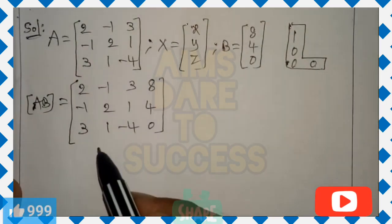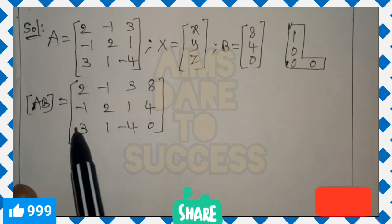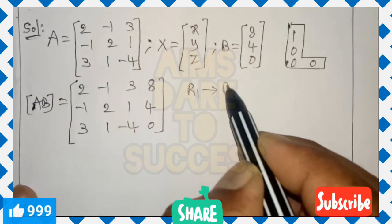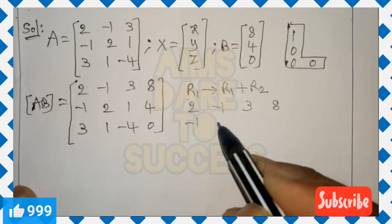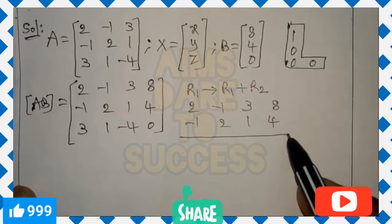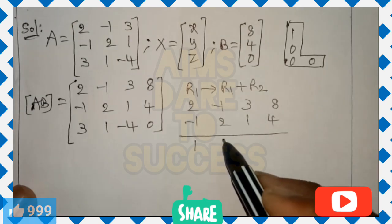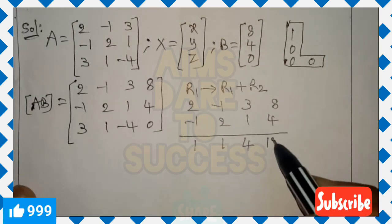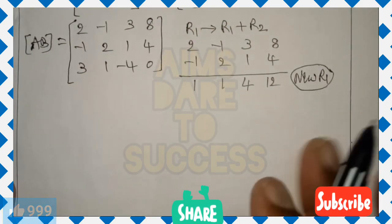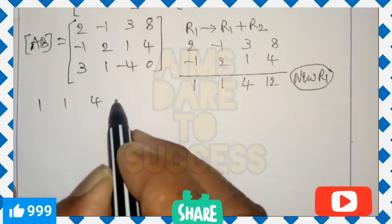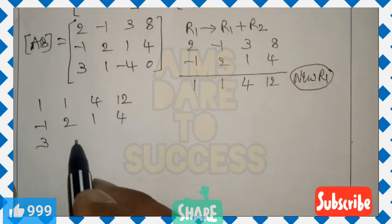Remember my logic: in the identity matrix we need 1, 0, 0 in the first column. First, we need the first element to be 1. I'll change R1 using R2: R1 gives R1 plus R2. R1 values are (2, -1, 3, 8) and R2 values are (-1, 2, 1, 4). Adding: 2 + (-1) = 1, -1 + 2 = 1, 3 + 1 = 4, 8 + 4 = 12. New R1 is (1, 1, 4, 12). R2 and R3 remain the same: R2 = (-1, 2, 1, 4), R3 = (3, 1, -4, 0).